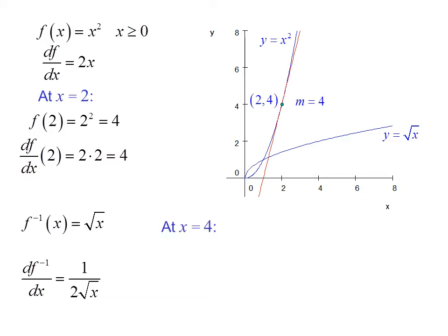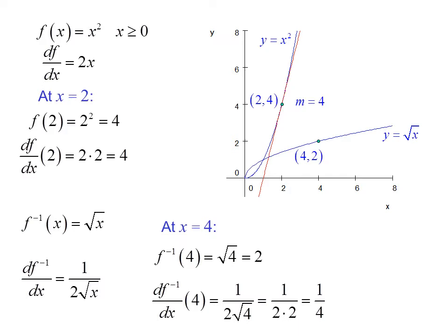At x equals 4, f inverse of 4 equals radical 4, or 2. So we put the point (4, 2) on the graph. df inverse/dx at 4 equals 1 over 2 radical 4, or 1 over 2 times 2, which is 1/4. So the slope at that point is 1/4, and we can draw the tangent.